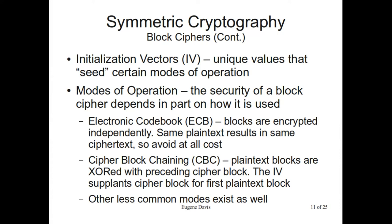An initialization vector, usually referred to as IV, is a unique value that seeds certain types of block cipher operation. The modes of operation are how you apply the block cipher. The original mode is called Electronic Codebook (ECB) — here each block is independently encrypted with the key. As a result, if you have repeating data, the ciphertext repeats, and that means you can start getting patterns from your data. The next is Cipher Block Chaining (CBC), basically the successor to ECB. This is where you XOR the preceding encrypted block with the current plaintext block. For the very first plaintext block you XOR it with the IV, giving you unique data as a start. There are a few other less common modes like cipher feedback, output feedback, and counter mode — counter mode is interesting because it lets the cipher act as a stream cipher.